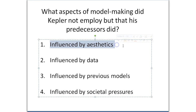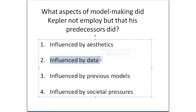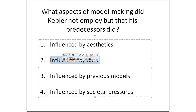His predecessors were definitely influenced by aesthetics — meaning beauty. They really wanted circles because they thought circles were the most beautiful and perfect shape. Everybody was influenced by data, Kepler and all of his predecessors, but Kepler was probably more influenced by the data. He wanted to be faithful to the data more so than he wanted to be faithful to the aesthetics.